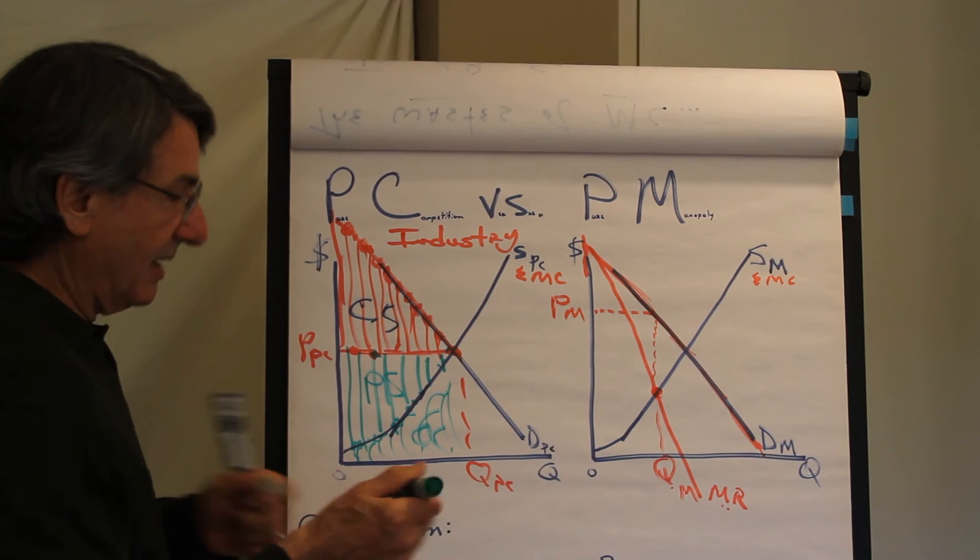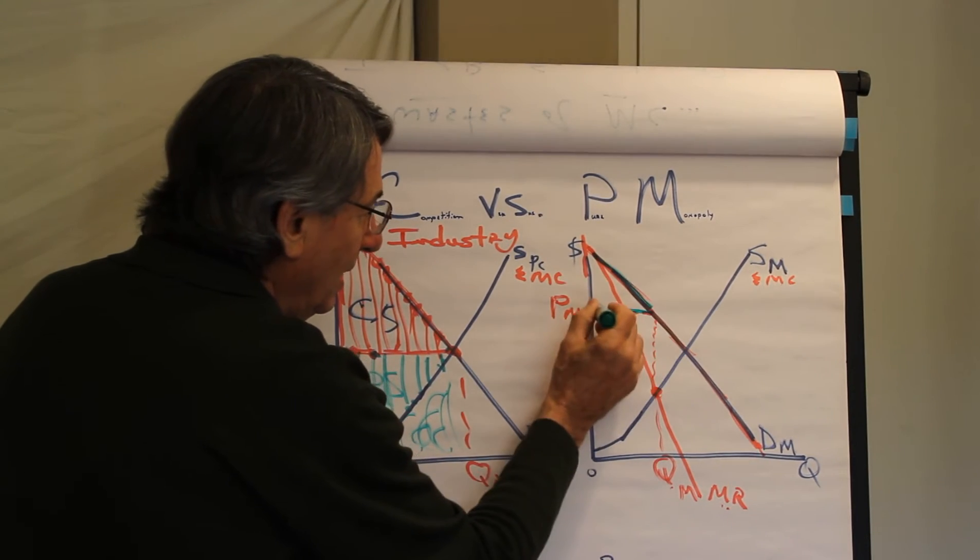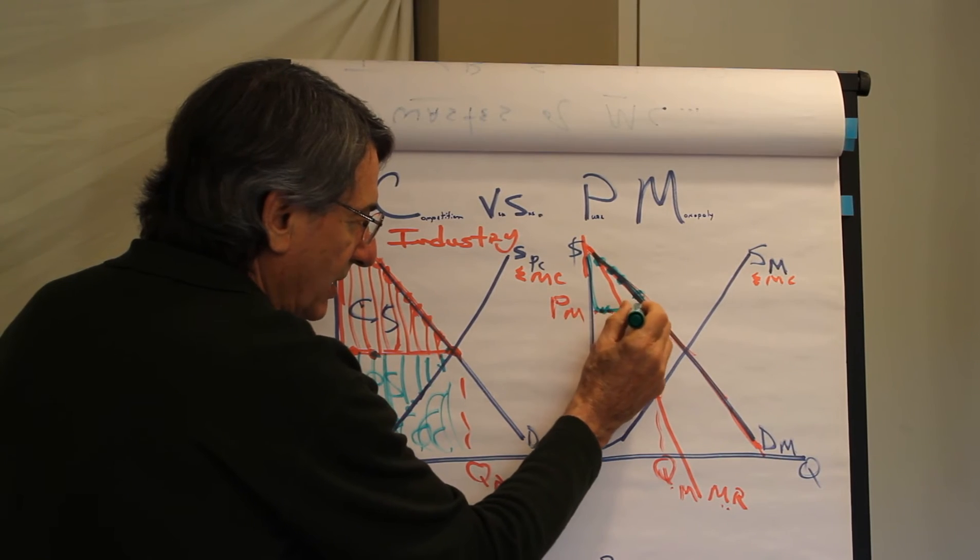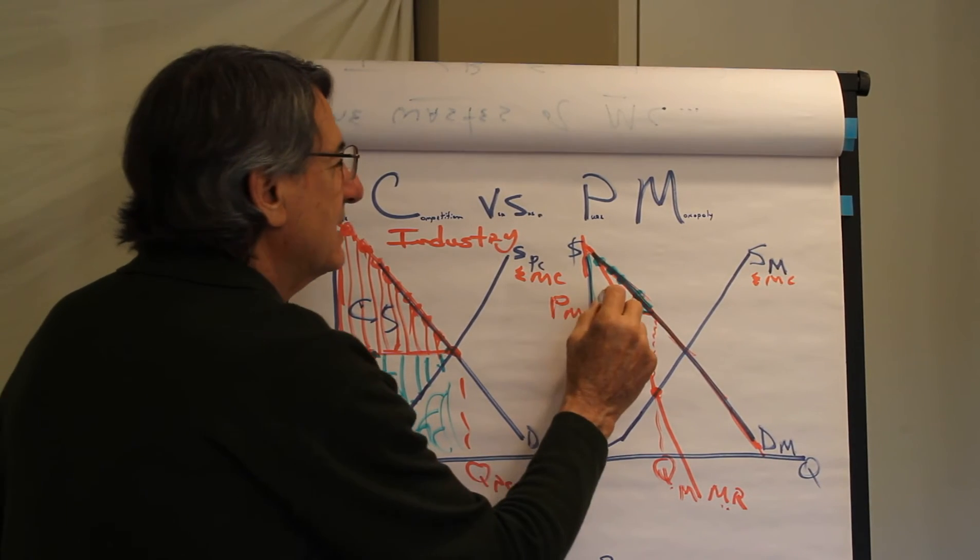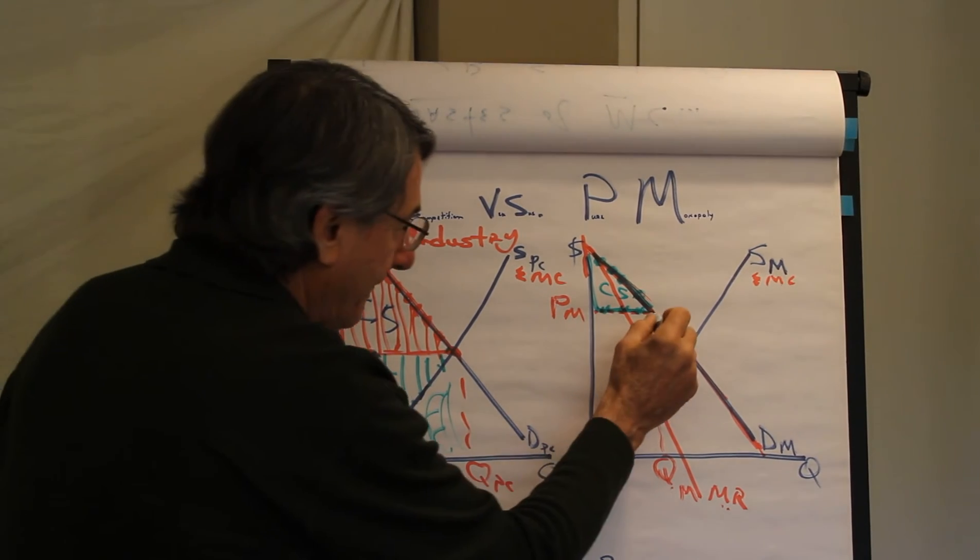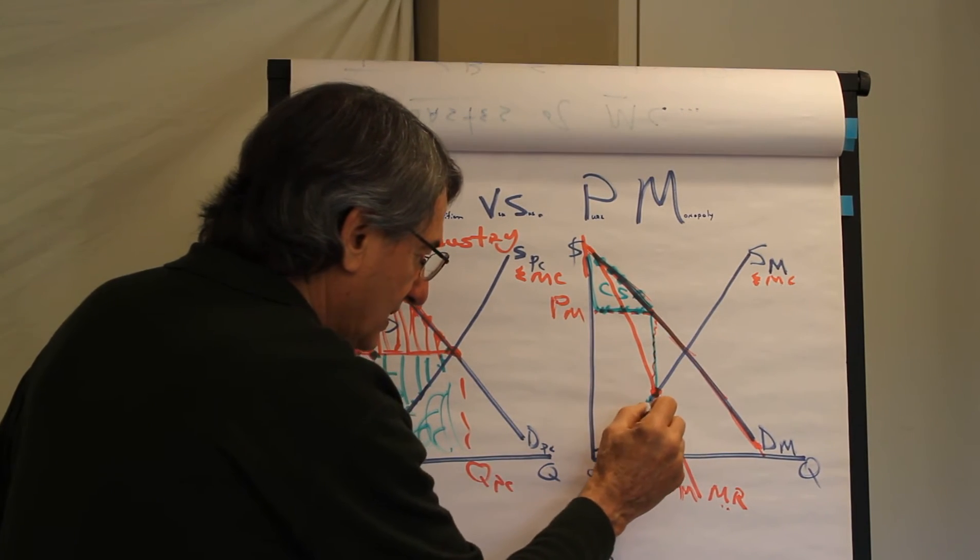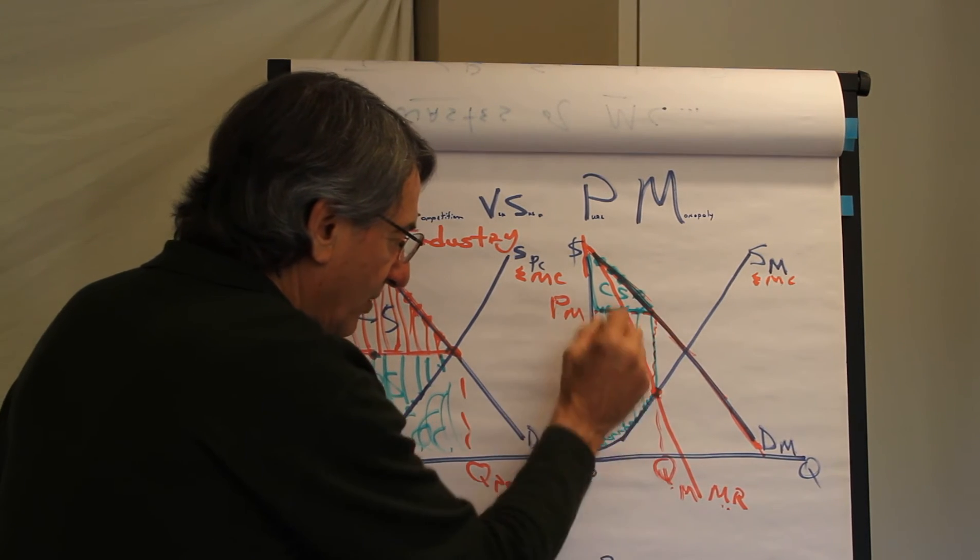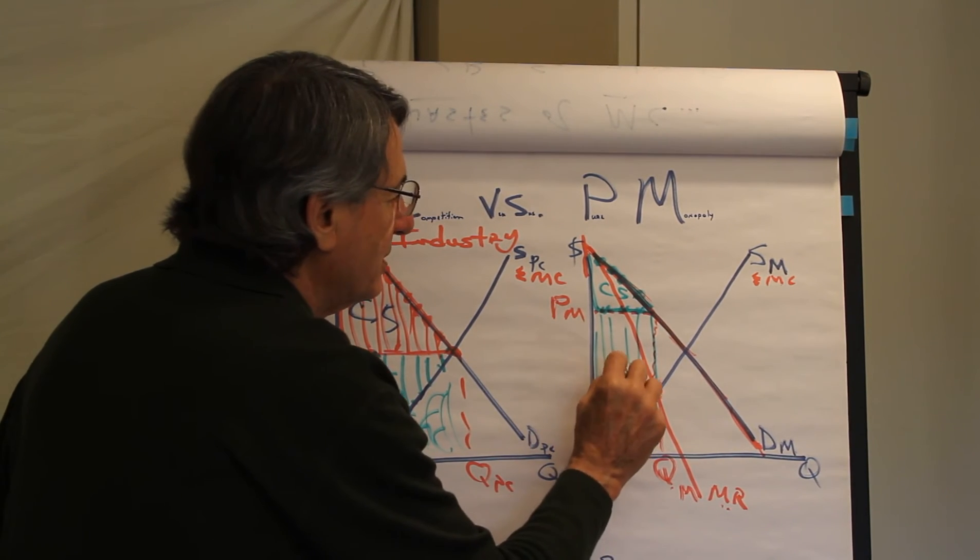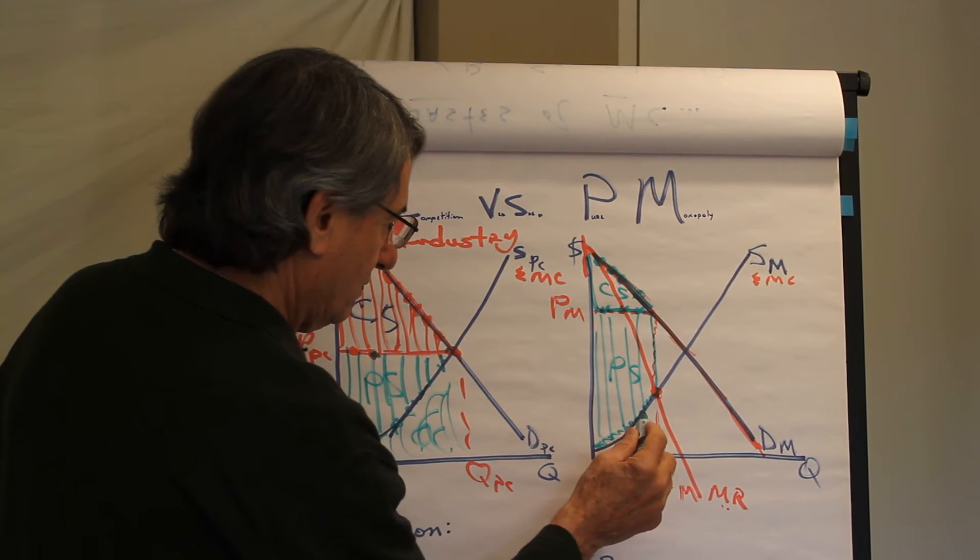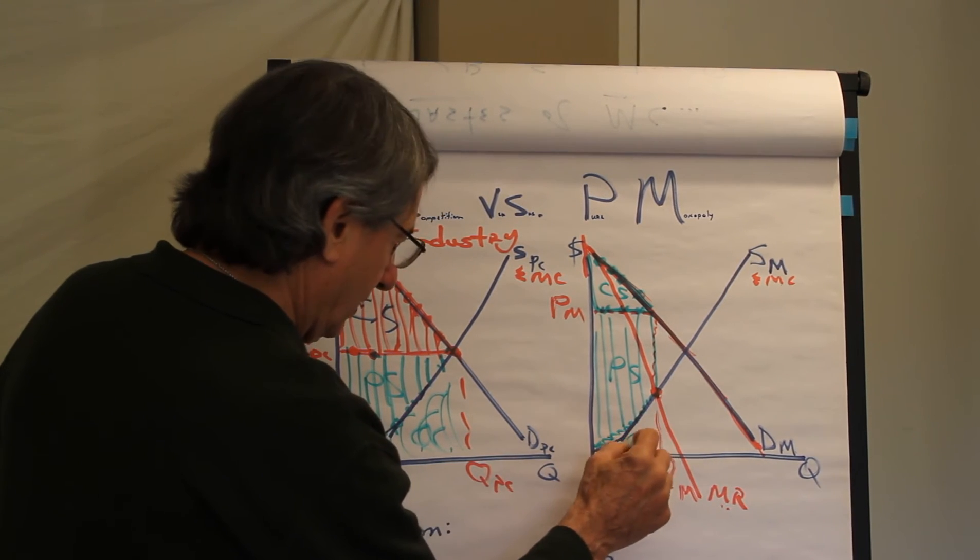Now what about this area here? The difference between the maximum consumers are willing to pay and what they actually pay? Then this is consumer surplus. Much smaller, yes? And then the difference between these opportunity costs here and what the seller receives. This is producer surplus. Opportunity cost is this area here.